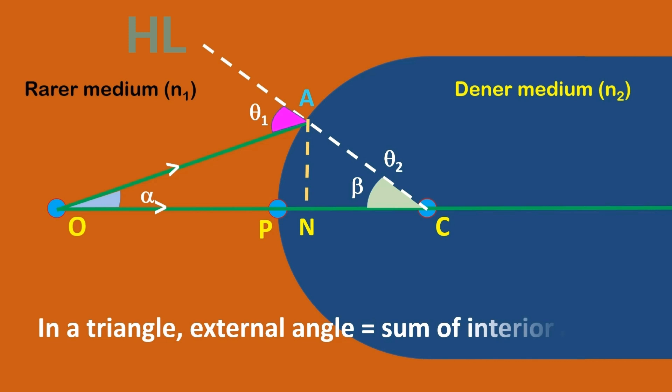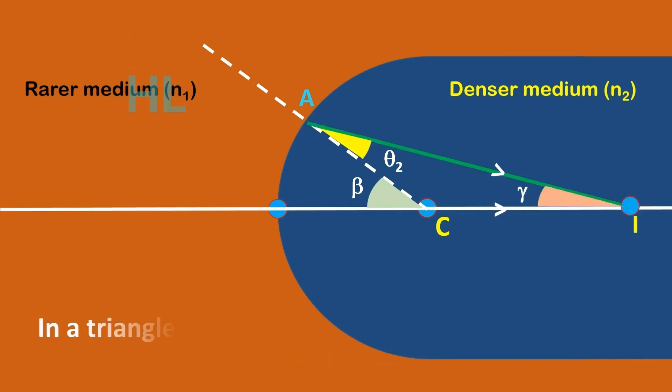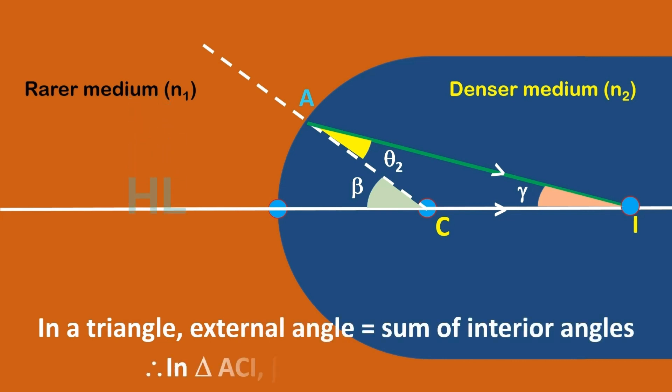In a triangle, external angle is equal to sum of opposite interior angles. Therefore in triangle ACO, theta1 is equal to alpha plus beta. Similarly in triangle ACI, beta is equal to theta2 plus gamma, or theta2 is equal to beta minus gamma.